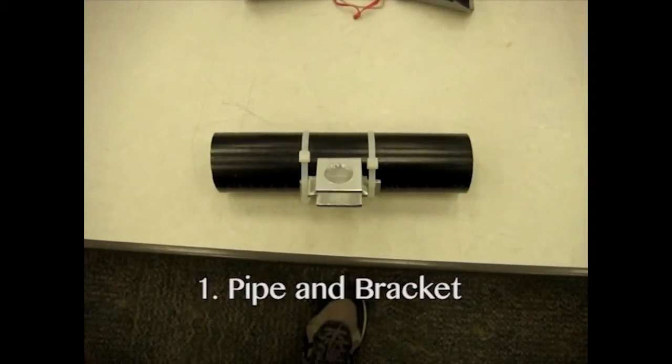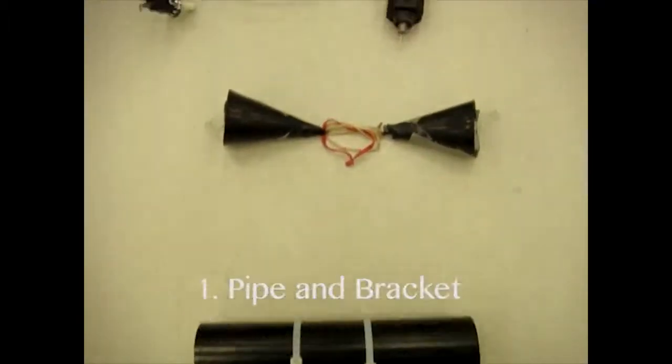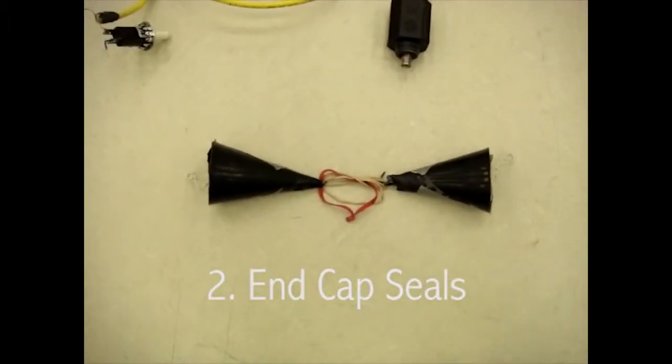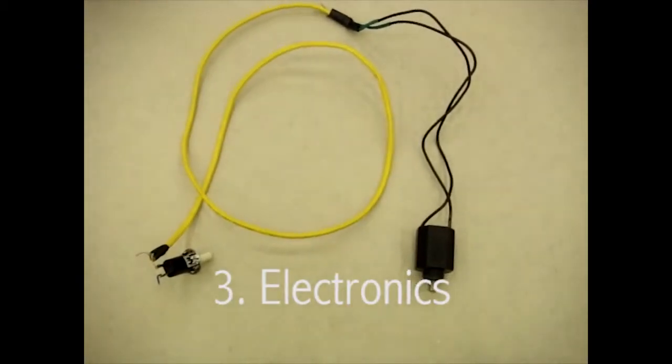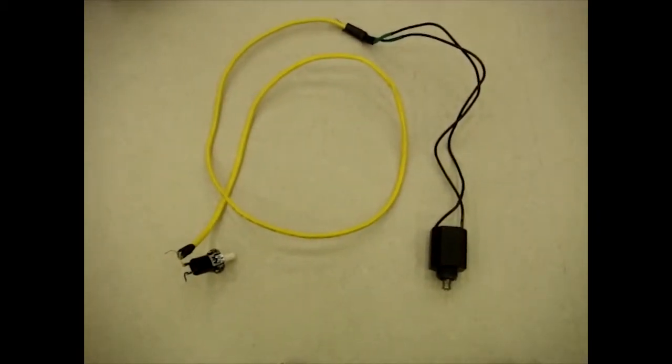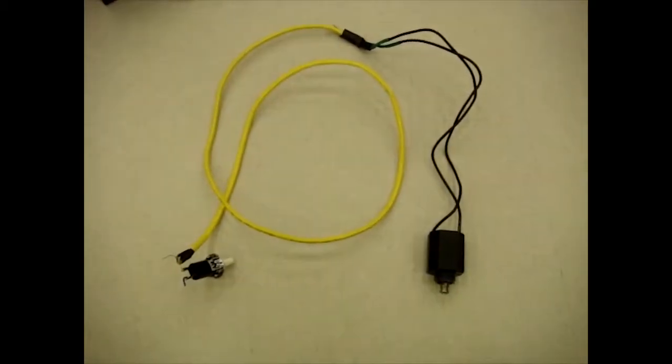First, how to make the pipe and the mounting bracket. Second, how to make the end caps that seal it. And third, how to make the electronics. But before we begin, we want to make sure that you have all the tools and materials necessary to get started.